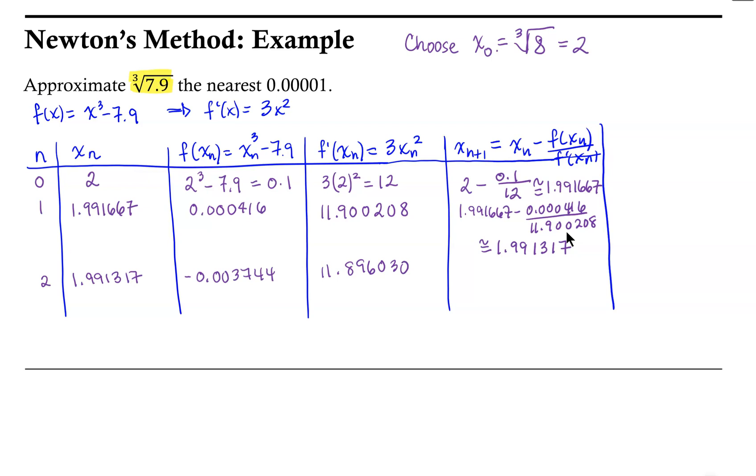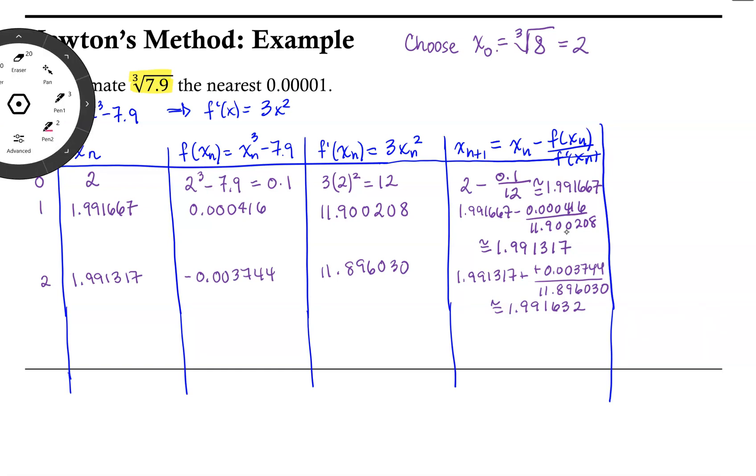So our next approximation to the value of that cube root would be 1.991317 minus a negative 0.003744 over 11.896030. So that actually becomes addition. And that is approximately equal to 1.991632. So we've found our third approximation with Newton's method.